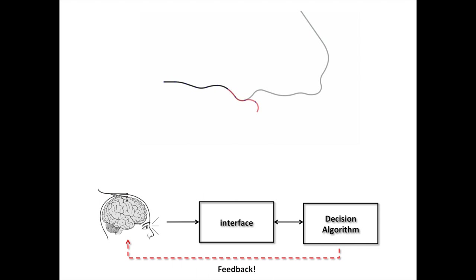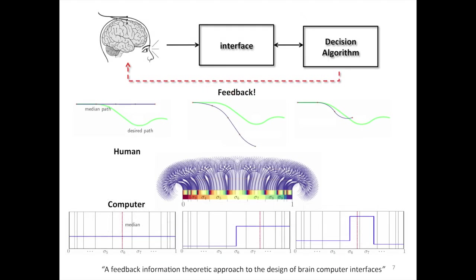The issue is that we're getting your response noisily, so we have statistical information. We want something analogous to 20 questions where the number in your head is perhaps a smooth path — like a path you want to navigate your wheelchair. I sequentially ask questions: is it less than 10 or greater than 10? I want to do that very cleverly so these questions zoom in on what's in your head. Underneath the hood is feedback information theory.